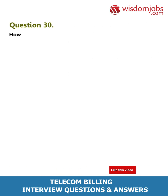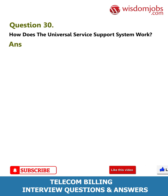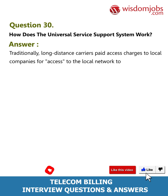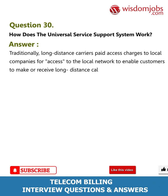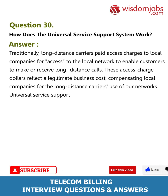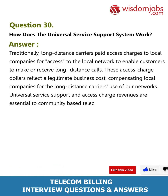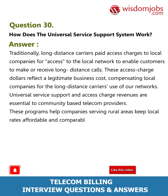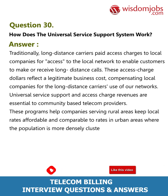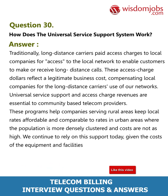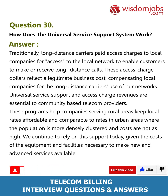Question 30: How does the universal service support system work? Answer: Traditionally, long-distance carriers paid access charges to local companies for access to the local network to enable customers to make or receive long-distance calls. These access charge dollars reflect a legitimate business cost, compensating local companies for the long-distance carriers' use of our networks. Universal service support and access charge revenues are essential to community-based telecom providers. These programs help companies serving rural areas keep local rates affordable and comparable to rates in urban areas where the population is more densely clustered and costs are not as high. We continue to rely on this support today given the costs of the equipment and facilities necessary to make new and advanced services available to rural customers.